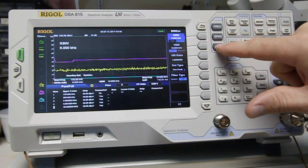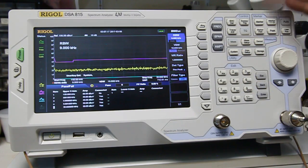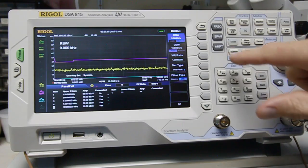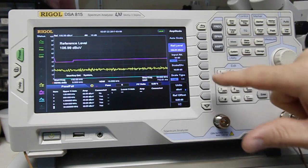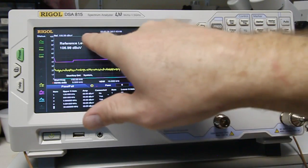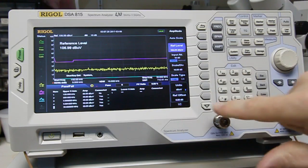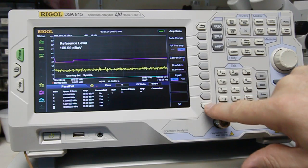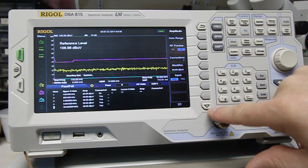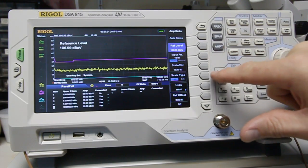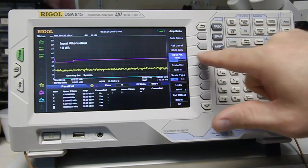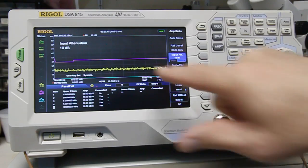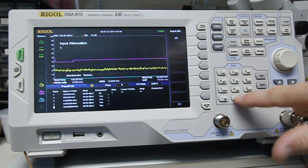Next thing is we want to make sure that we have an attenuator turned on in the analyzer for safety purposes. You can already see that it's turned on here. Input attenuator, we're going to go to manual. And it's already set there. But we're going to put in 10 dB.